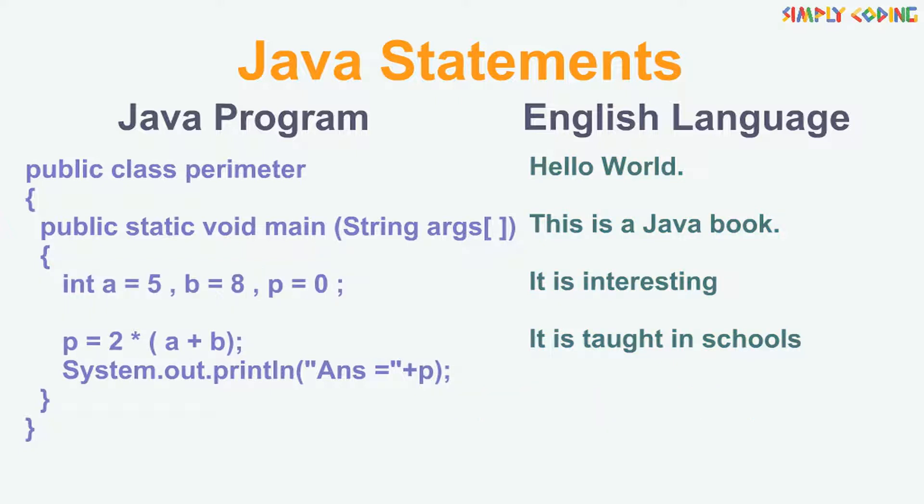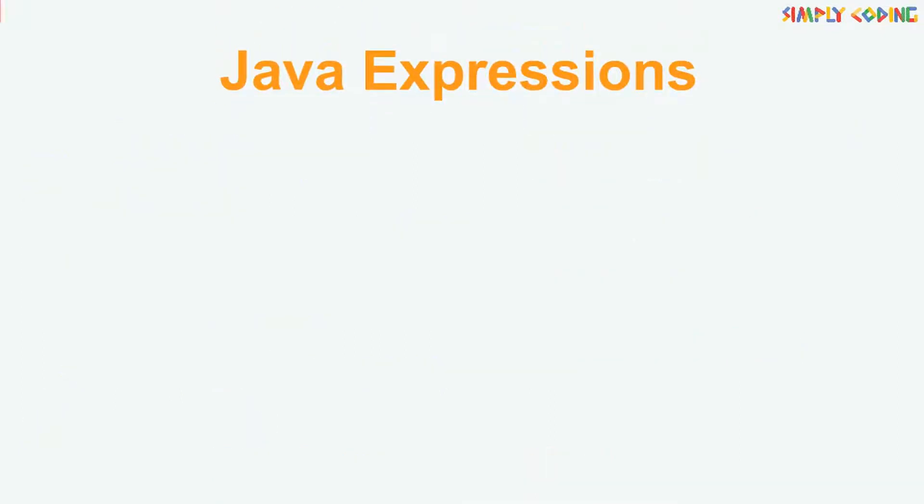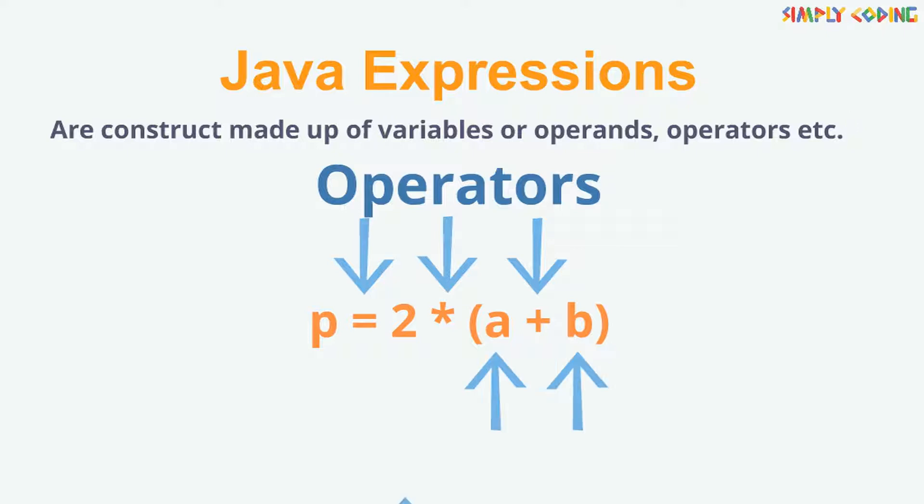A statement is made up of one or more expressions. An expression is a construct made up of operators and operands. Operands could be variables, constants, or functions which is constructed according to the syntax of the language and evaluates to a single value.